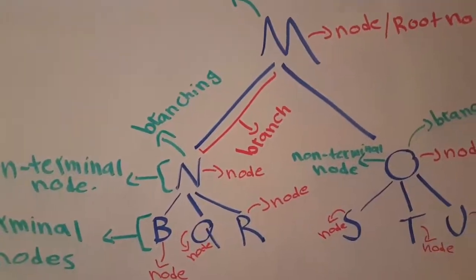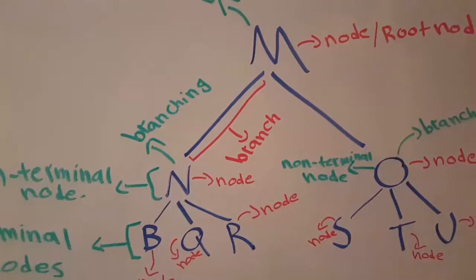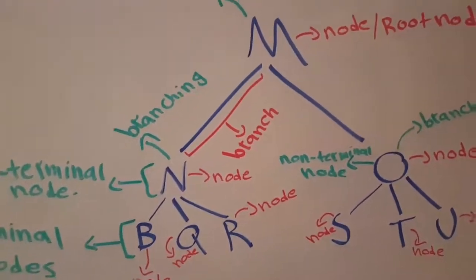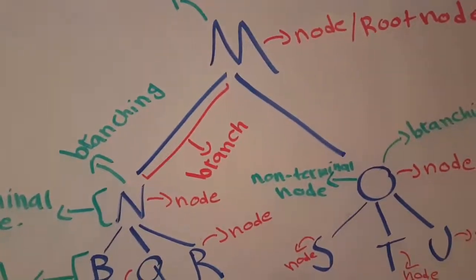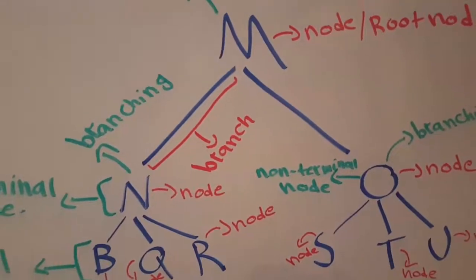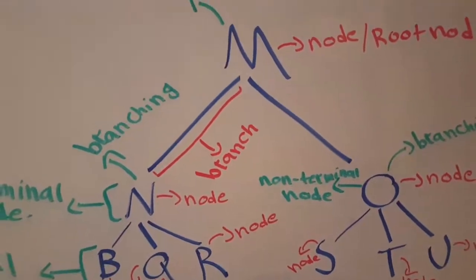The most important thing to know about each tree is that every tree has only one root node.